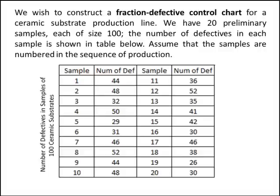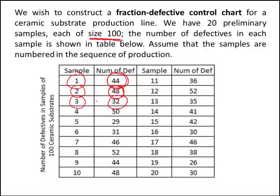We have 20 preliminary samples, each of sample size 100. The number of defectives in each sample is shown in this table. The samples are numbered in the sequence of production. For sample number one, we take a sample of size 100 and see 44 defectives. Sample two has 48 defectives, and sample three has 32 defectives. We continue this for 20 samples, noting the number of defectives each time. So the first point to plot is 0.44, the next 0.48, then 0.32.